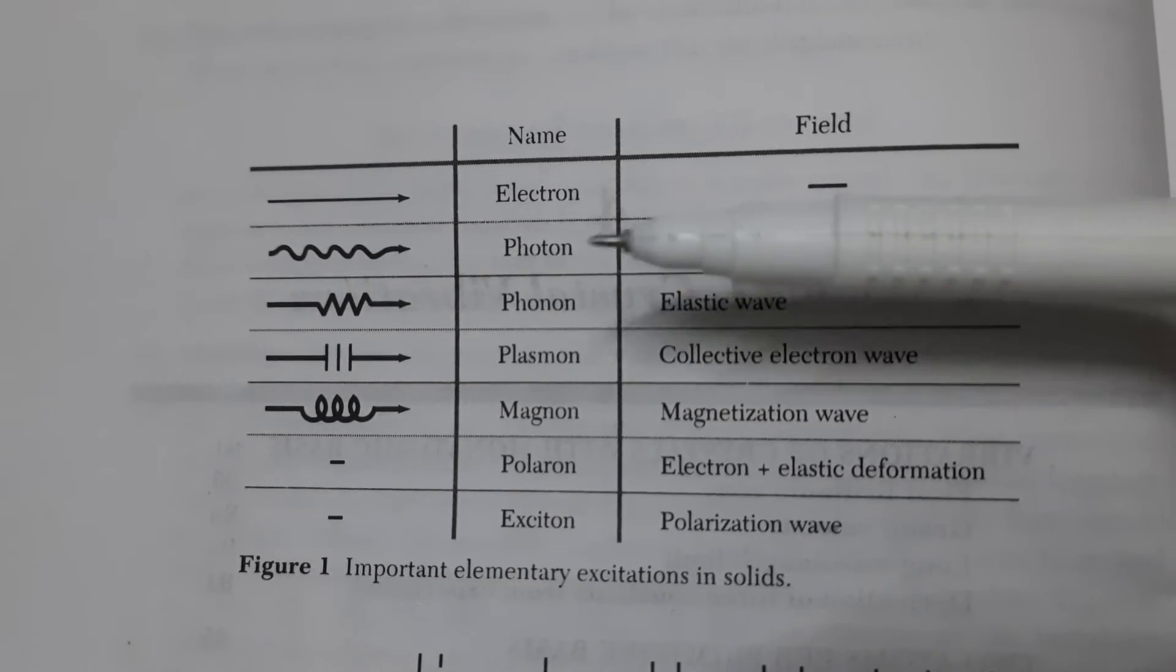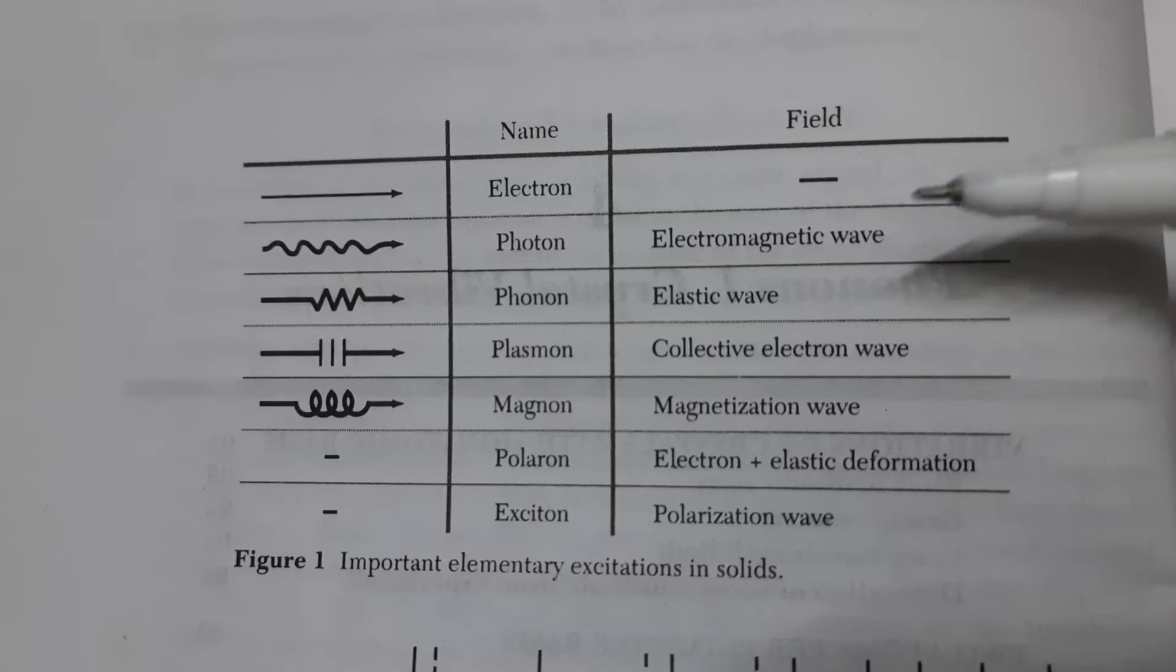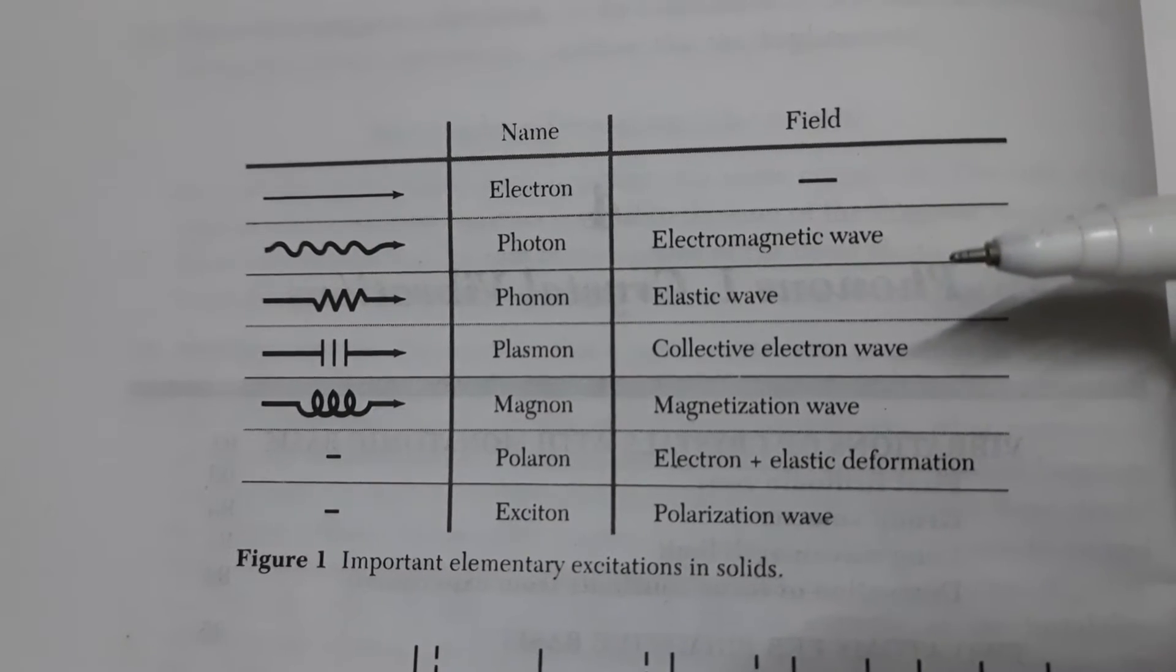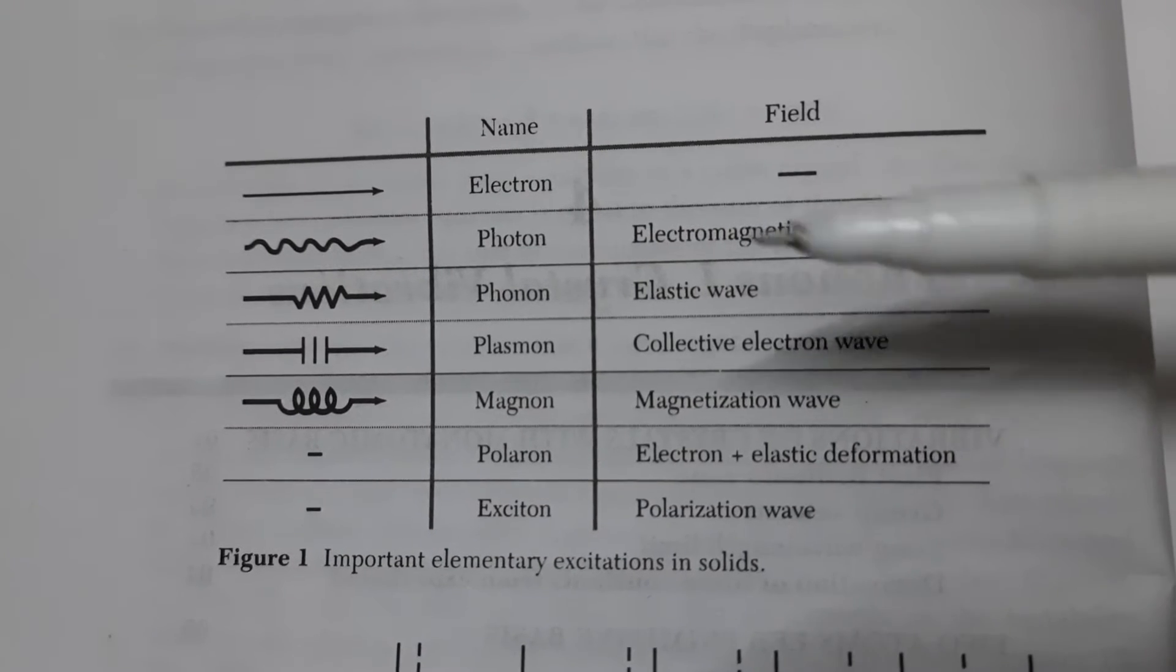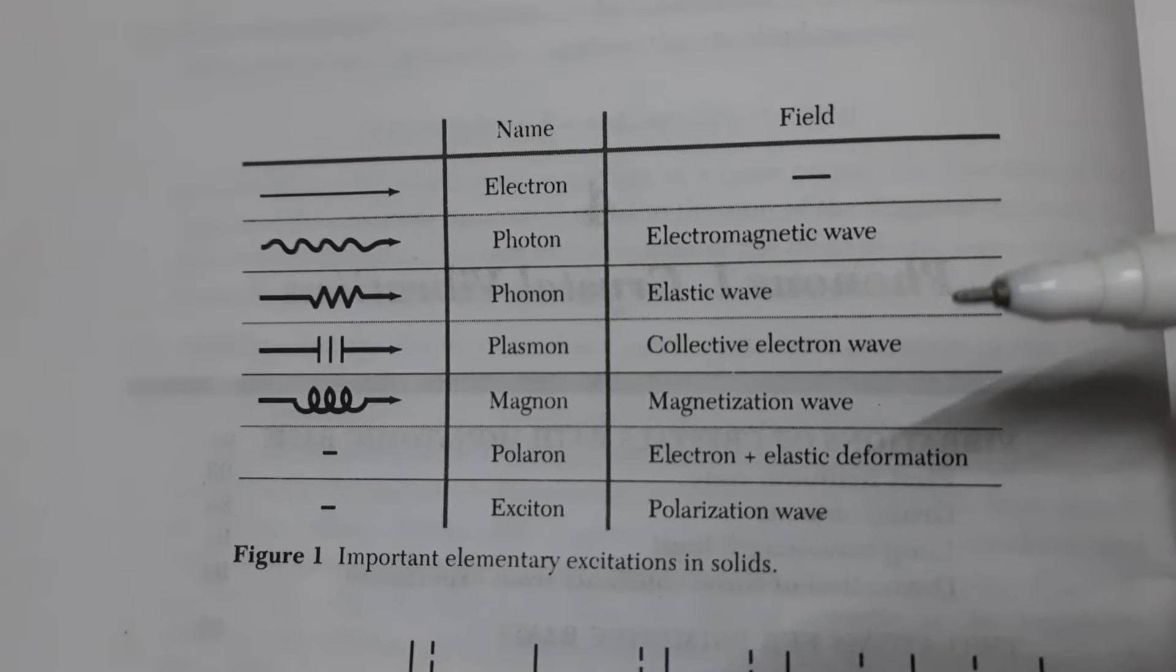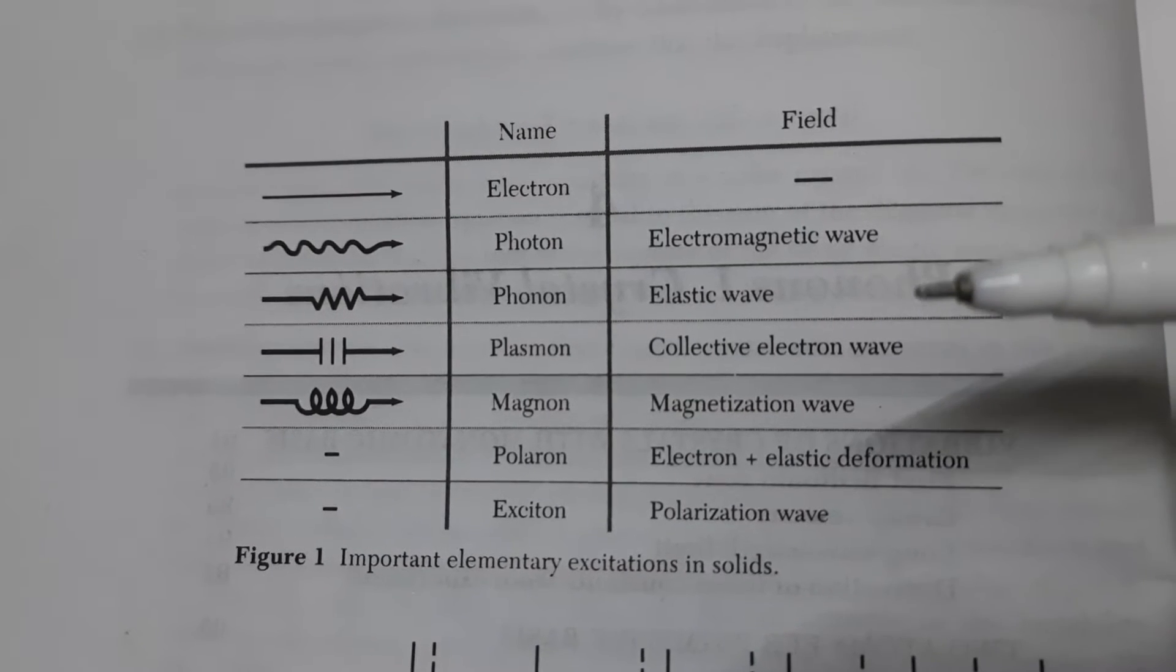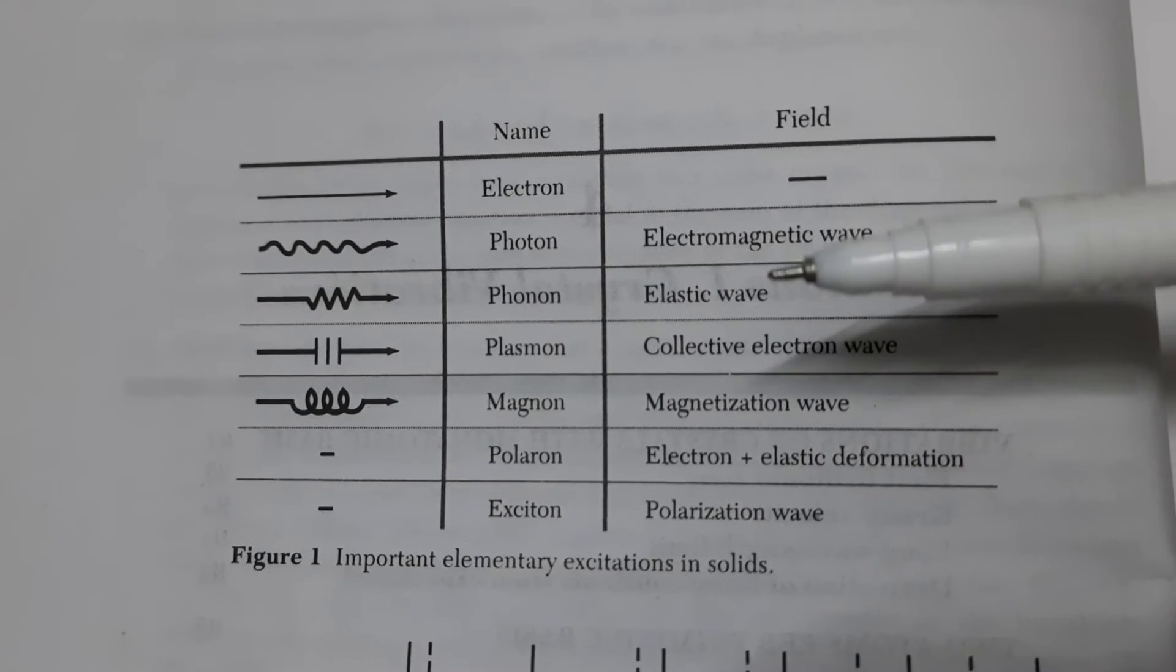The photon is like a wavy arrow and the field associated with a photon is electromagnetic wave. For phonon, it is like a triangular arrow and the associated field is elastic wave. Basically phonon comes due to lattice vibrations, the elastic wave or sound wave.